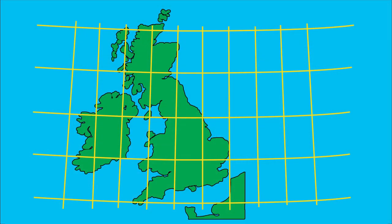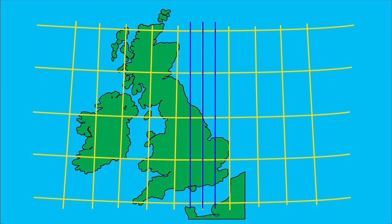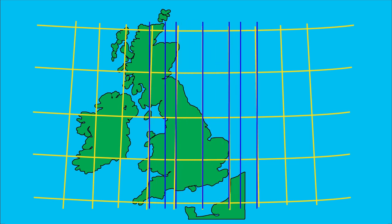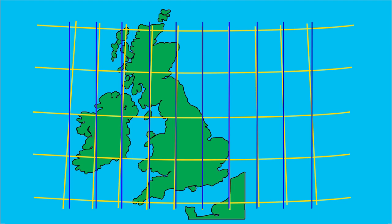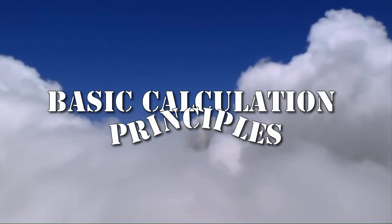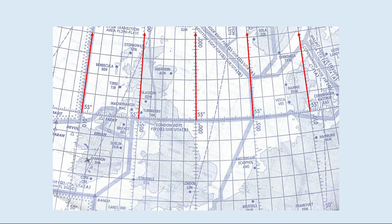A grid line is constructed by taking a reference meridian — usually the prime meridian, but other meridians can also be chosen as the reference. In your examination you might encounter questions where a reference meridian other than the prime meridian is used. From the reference meridian, parallel lines are drawn at equidistant intervals to mark the grid lines. On screen is a portion of a polar stereographic chart. The direction of the meridian upward is true north, marked by the red arrow. Zero degrees longitude — the prime meridian — is the reference meridian represented by the blue line, and the parallel lines are drawn on each longitude at 55 degrees latitude to represent the grid.